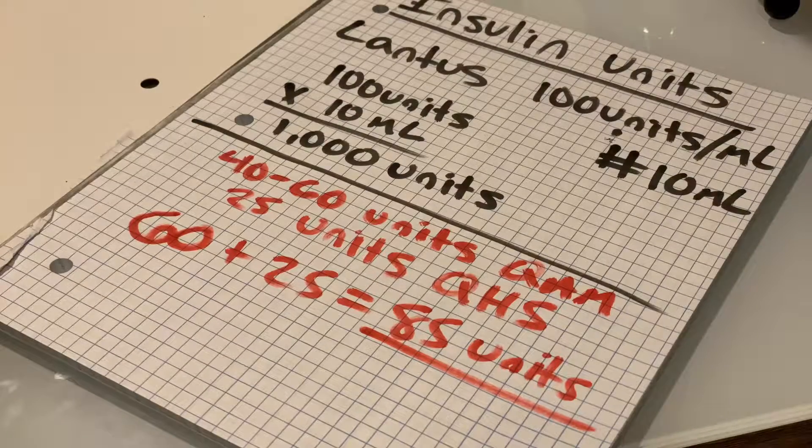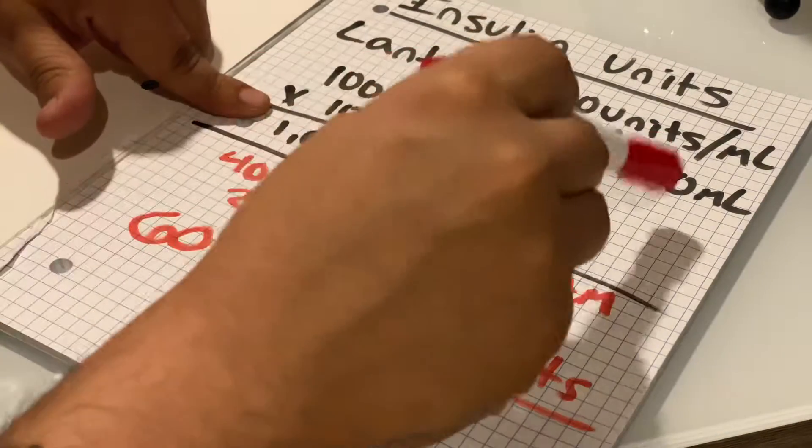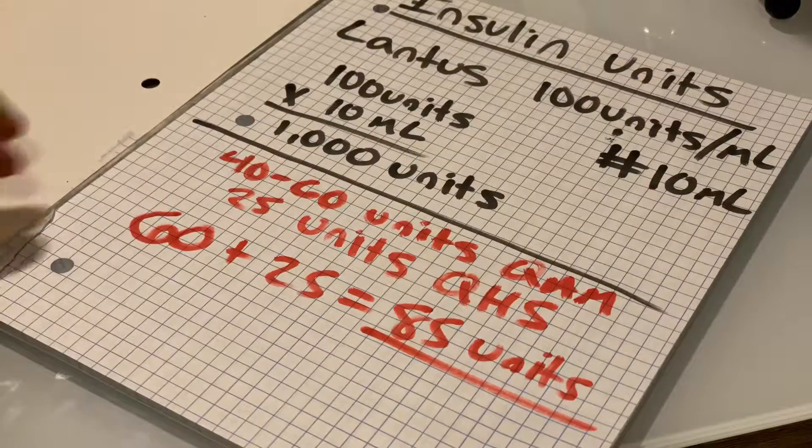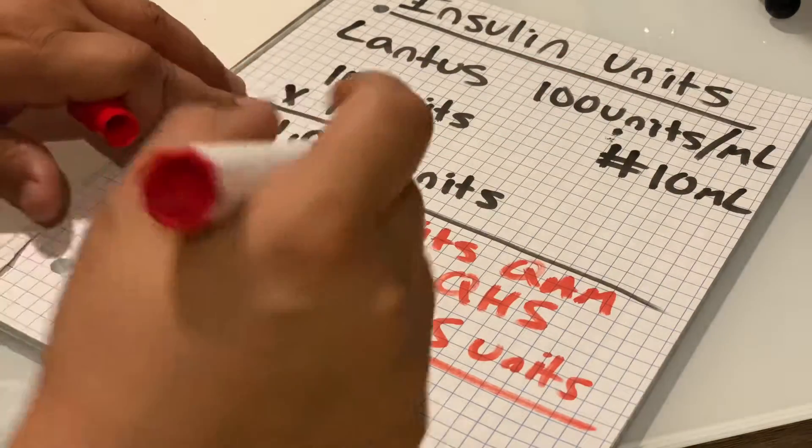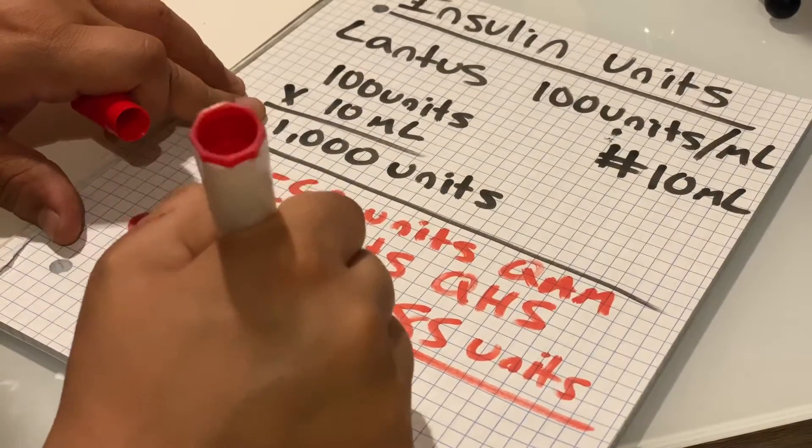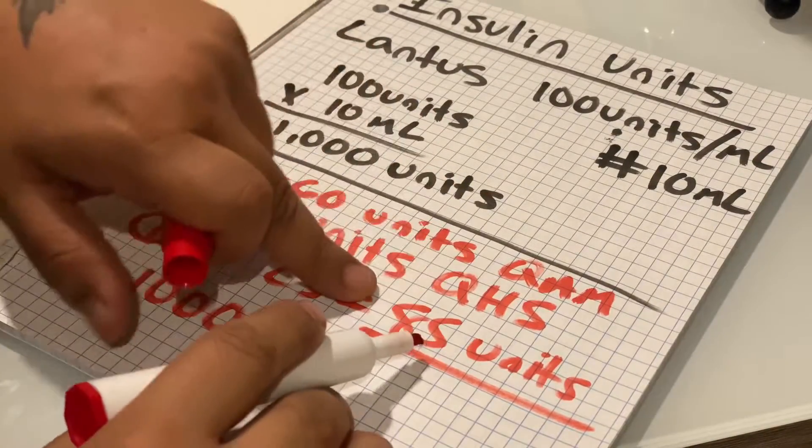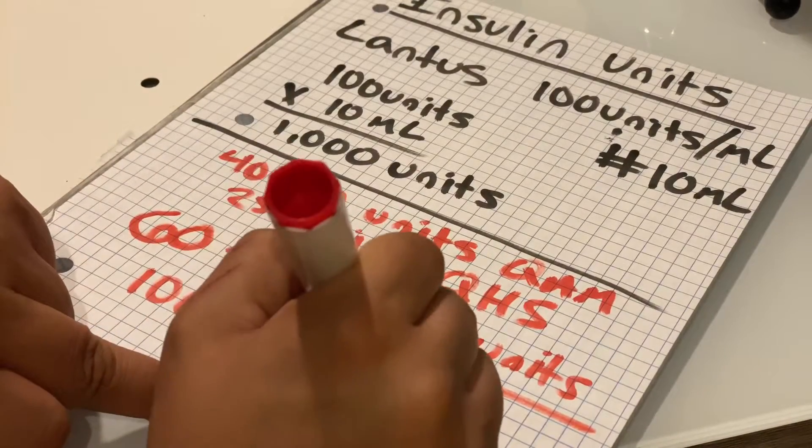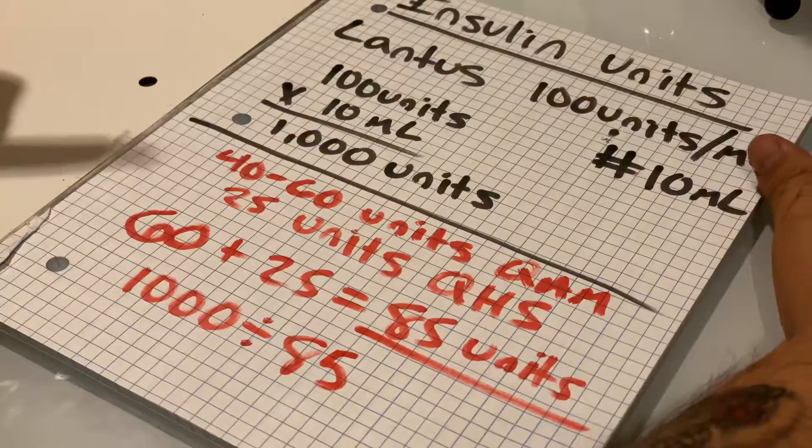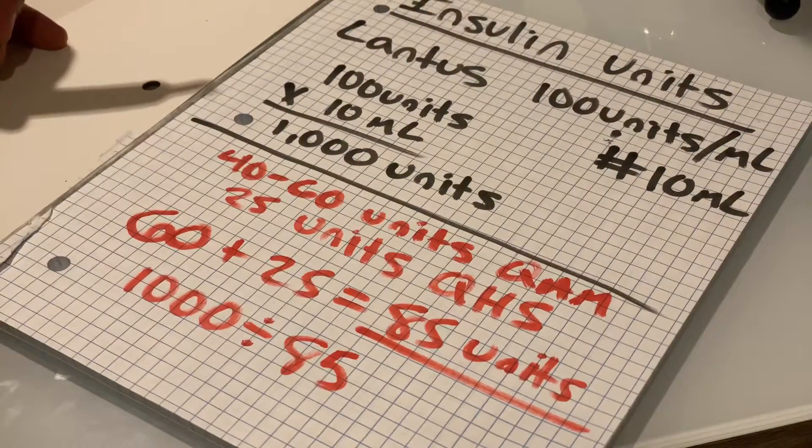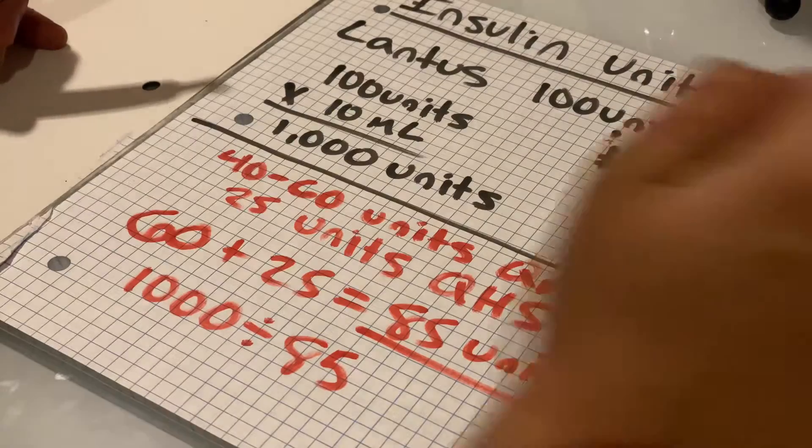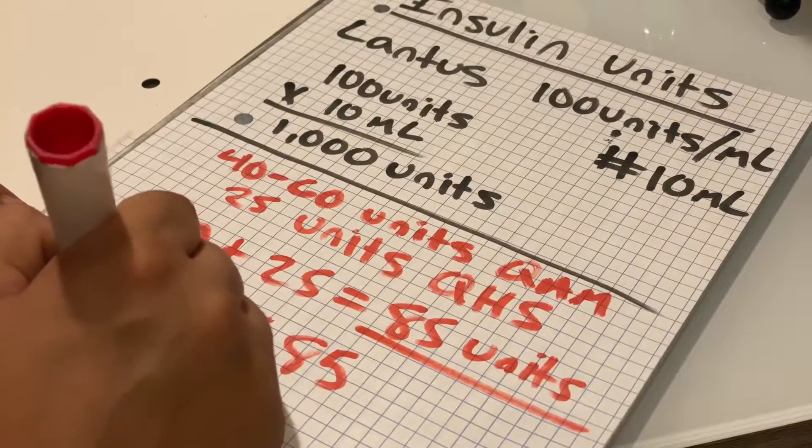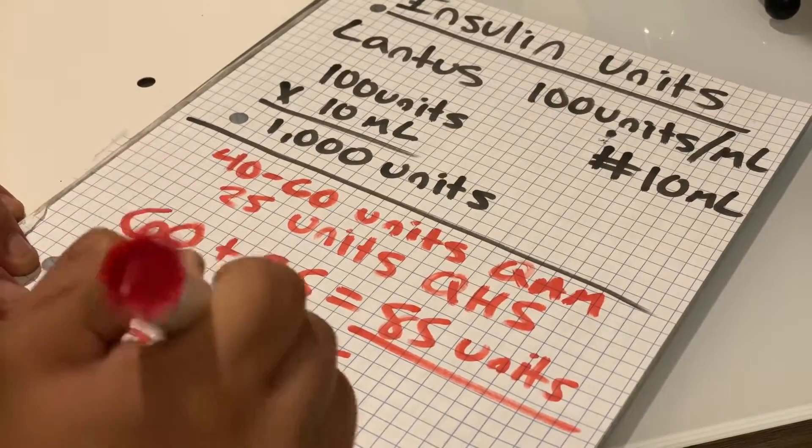So 85 units is what they're using per these directions. We know we're giving 1,000 units because that's what we figured out first, and we know they're using 85 units. So all you're doing now is taking those 1,000 units, dividing it by how much they're using in a day, which is 85. 1,000 divided by 85 gives you 11.76, so we round that up to a 12-day supply.